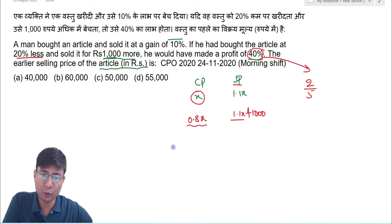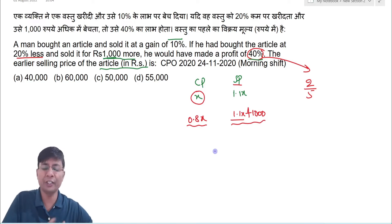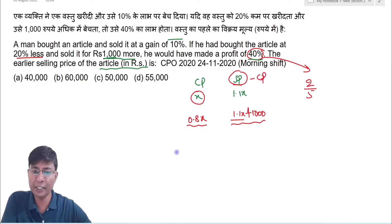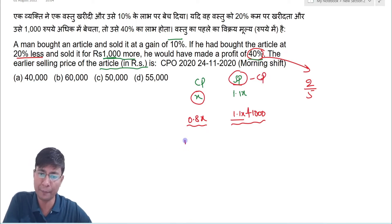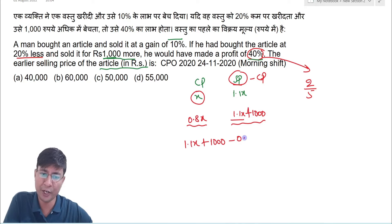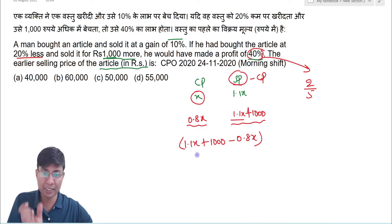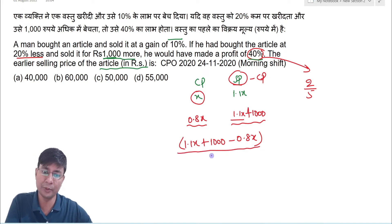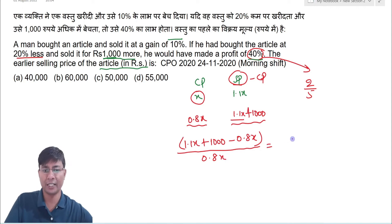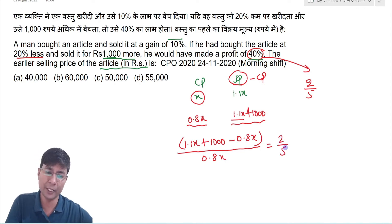We know the cost price and selling price, so profit = SP − CP. The profit equation becomes: (1.1x + 1000 − 0.8x) divided by the cost price 0.8x equals 2/5.